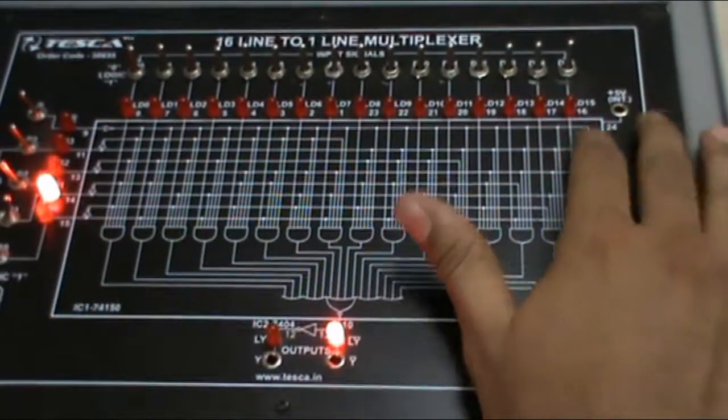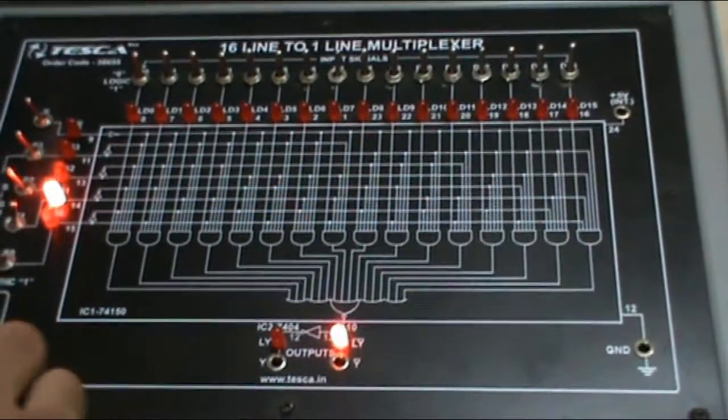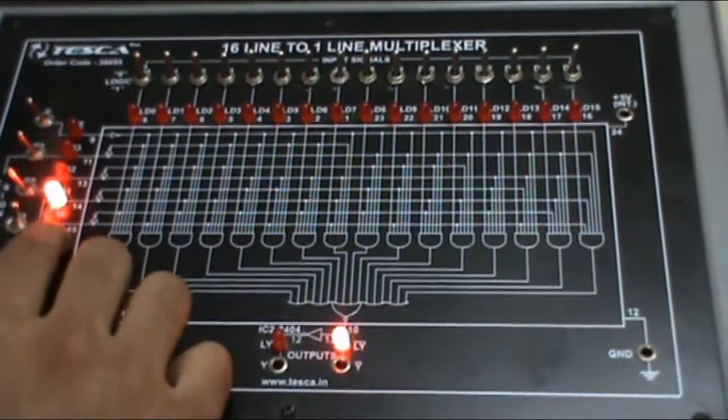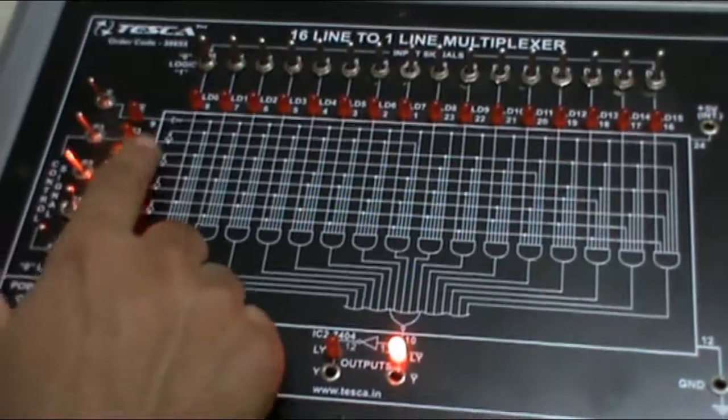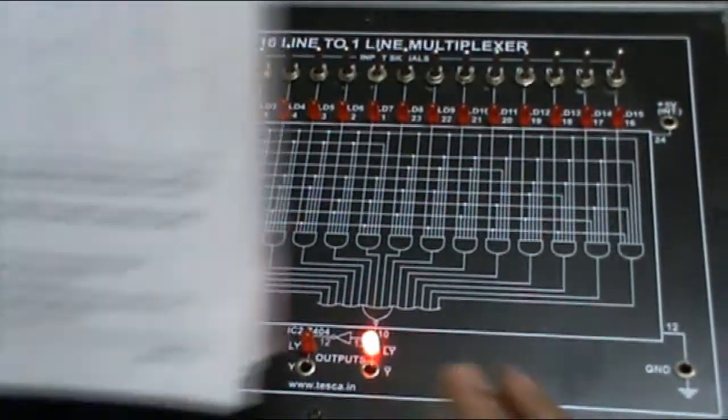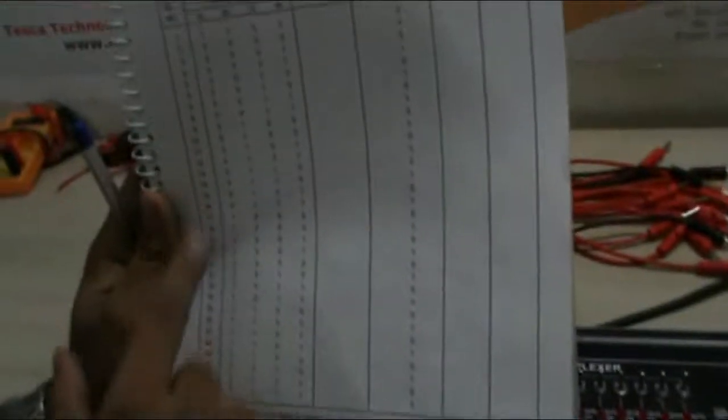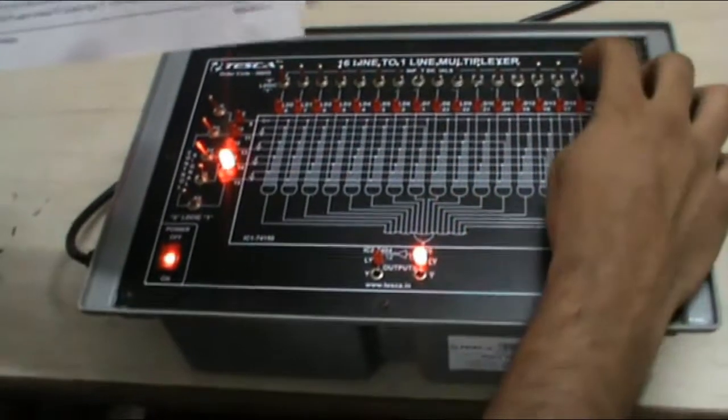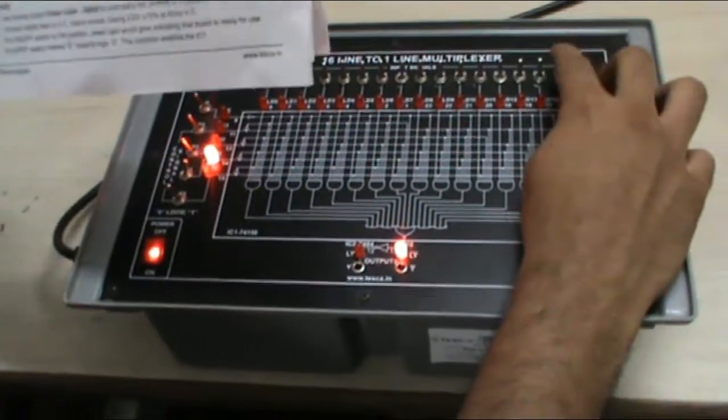Similarly take all the readings from D0 to D16 for the values of LS0 to LS3. Put different values, select the different LEDs and record all the readings according to the table given in the manual. You will have 32 readings as there are 16 points and 2 values for each point. Record all the readings for experiment 1.